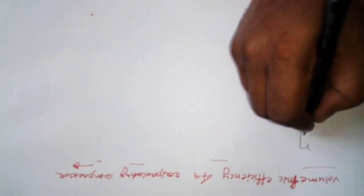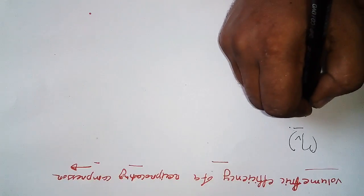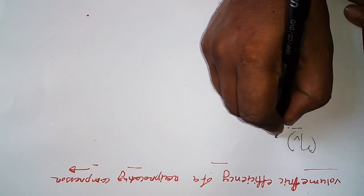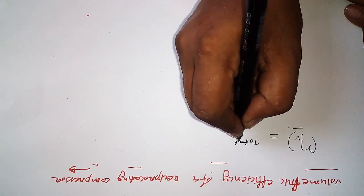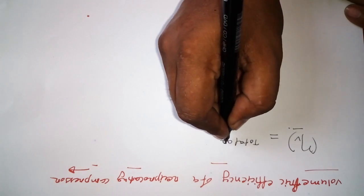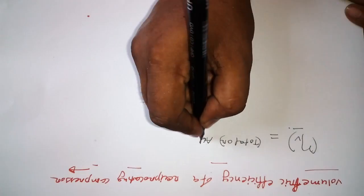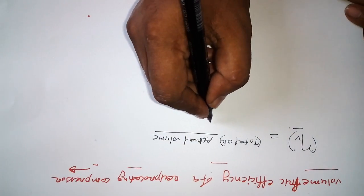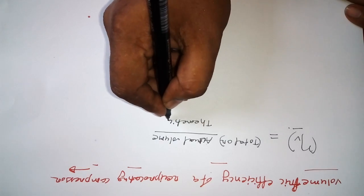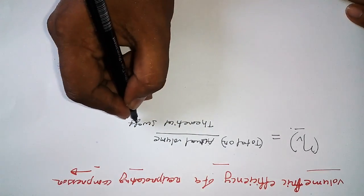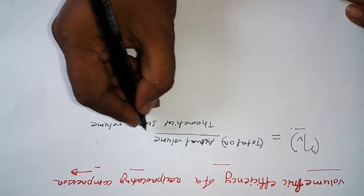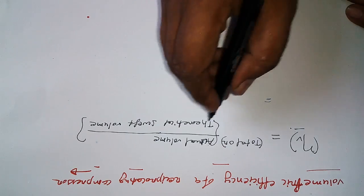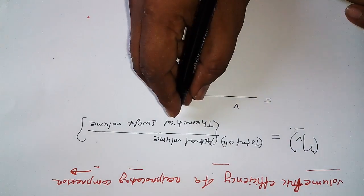Volumetric efficiency is denoted by eta_V. It is defined as actual volume divided by theoretical swept volume — that is, eta_V equals actual volume by theoretical swept volume.